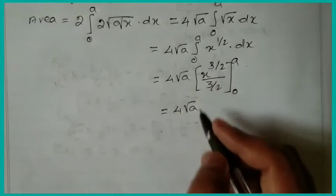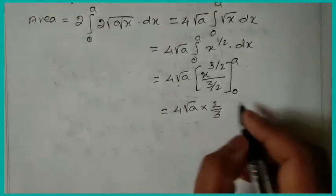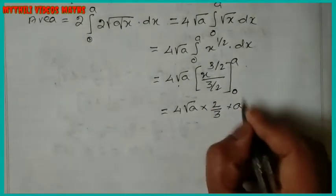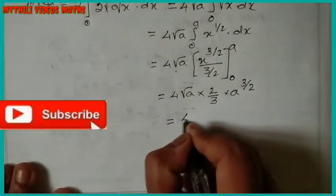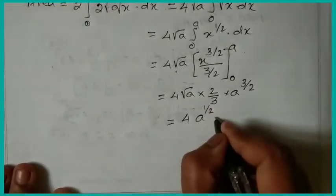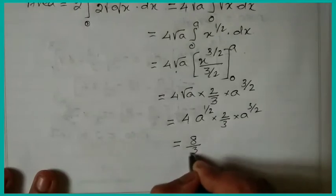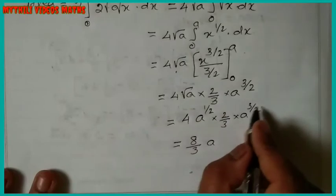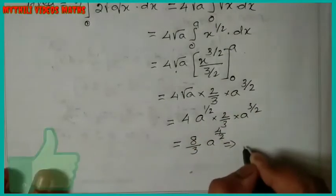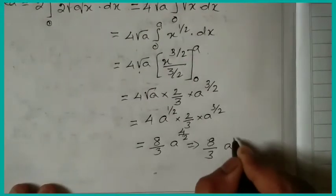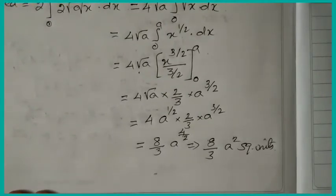Bringing 3/2 to the numerator gives 2/3. Applying the limits, we get 4√a × (2/3) × a^(3/2). Since √a = a^(1/2), we add the powers: a^(1/2) × a^(3/2) = a^(4/2) = a². So the final answer is 8a²/3 square units.